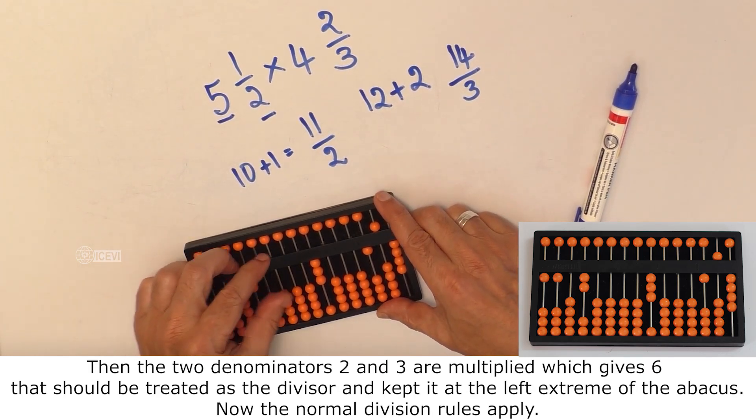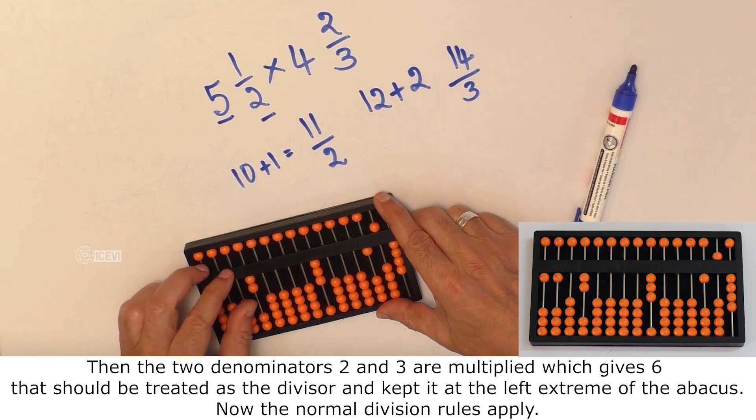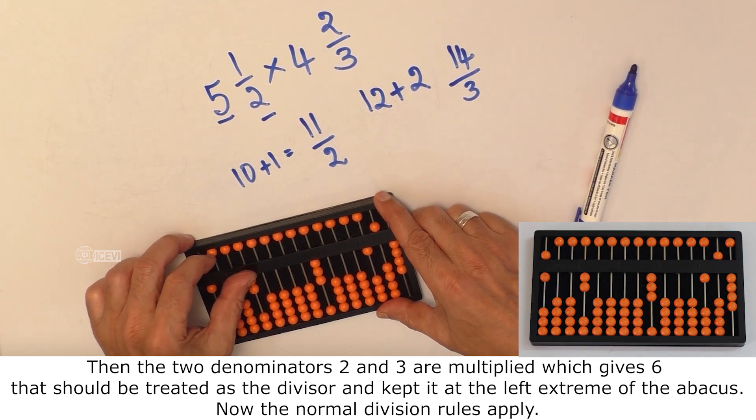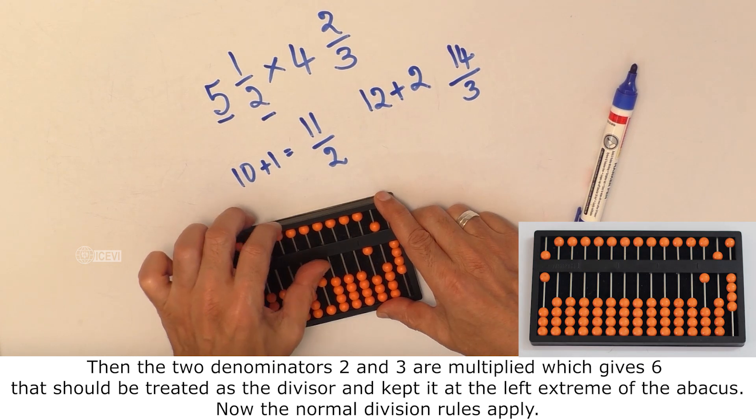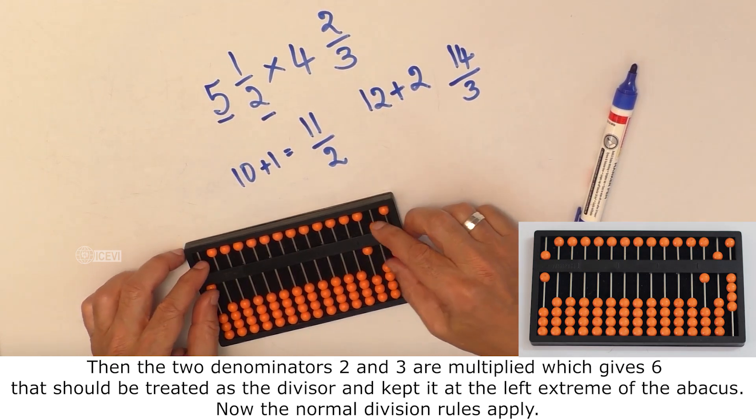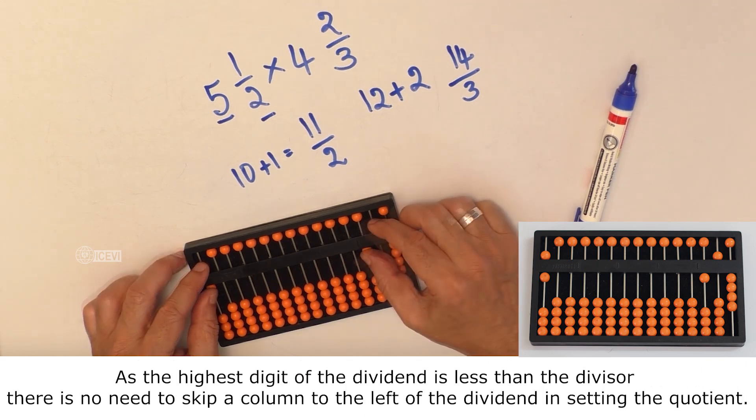Then the 2 denominators 2 and 3 are multiplied which gives 6. That should be treated as the divisor and kept at the left extreme of the abacus.